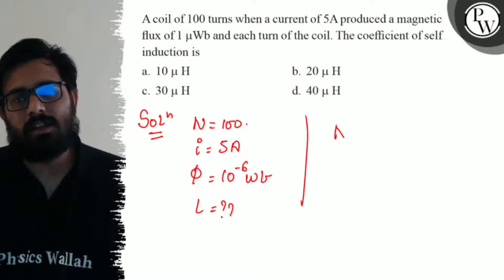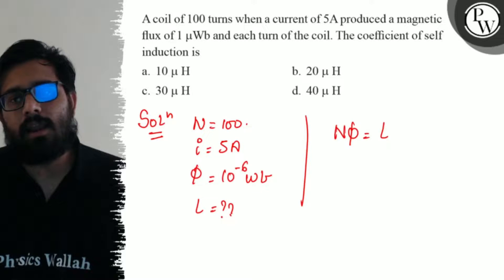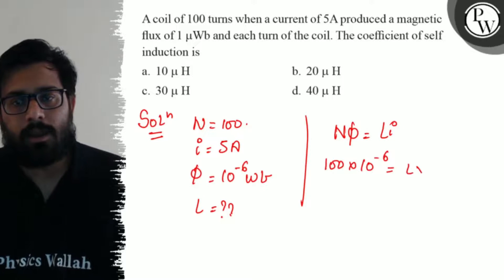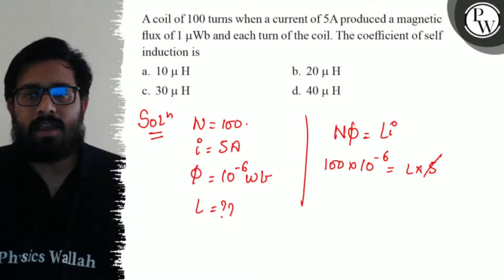We know that the relation NΦ is equals to LI. Just putting the values: 100 into 10 raised to the minus 6 is equals to L into 5. 5 and 100 cancel out, giving us 20 into 10 raised to the minus 6.